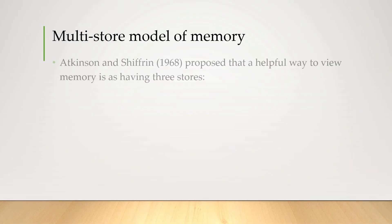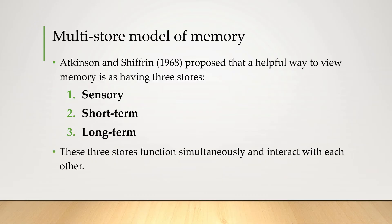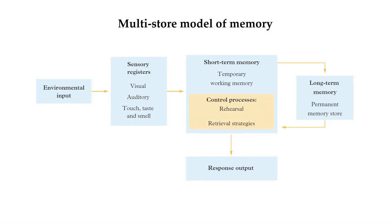In 1968, Atkinson and Shiffrin proposed a three-storage model of understanding memory. Those three storage places were sensory memory, short-term memory, and long-term memory — all of these interact with each other and are working at the same time. In the form of a diagram, the multi-store model of memory looks something like this. Environmental input first gets registered by our senses and then goes into short-term memory. This can stay here if we do things like rehearsing, or it can go to long-term memory. Whatever the case, before it can be retrieved it needs to go back into this short-term working memory space and then it can come out as a response.